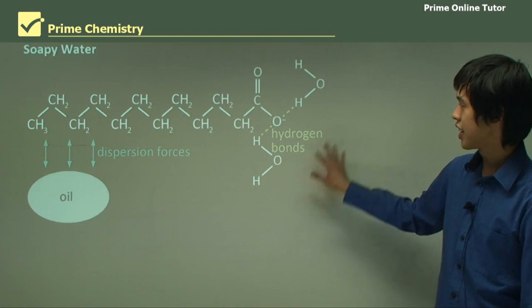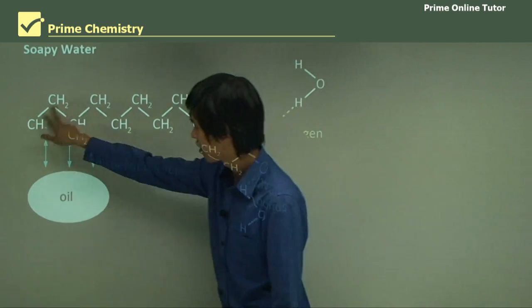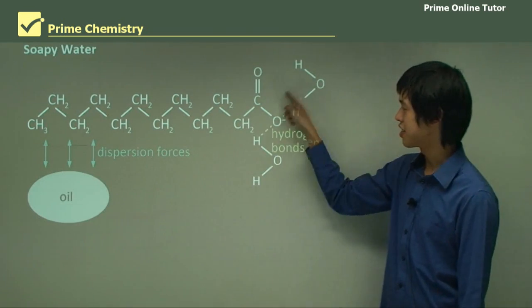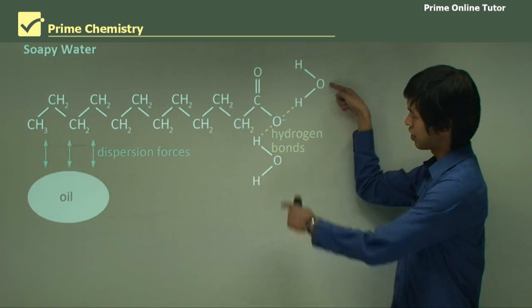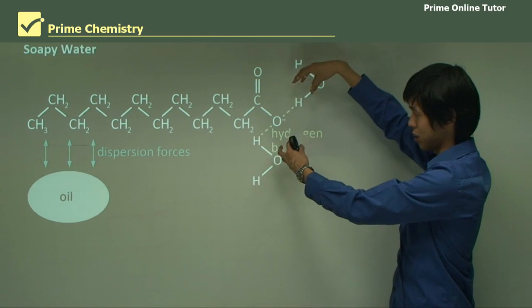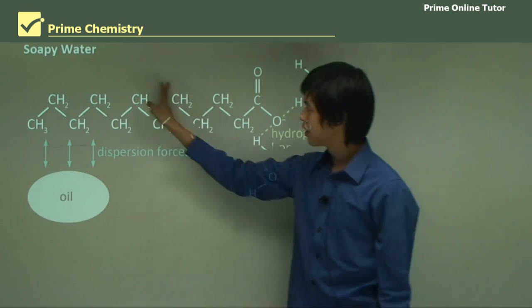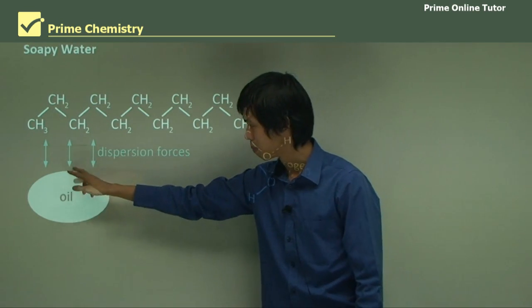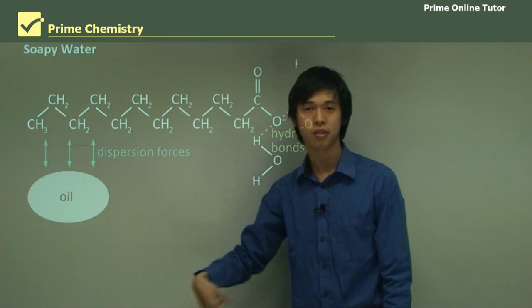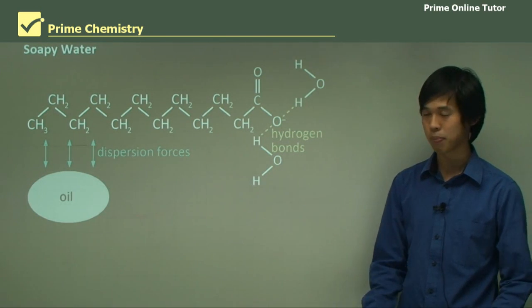Here's our soapy water. This is our long chain of our tail, and this is our negatively charged head. As you can see, this negatively charged head tends to bond to the water molecules through hydrogen bonds. And this long tail end tries to bond with these oil molecules with dispersion forces.